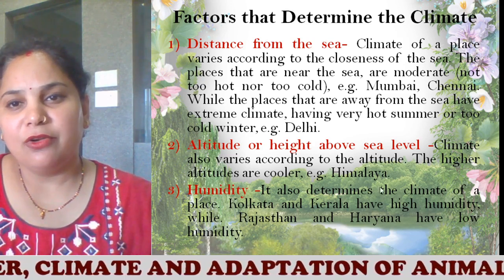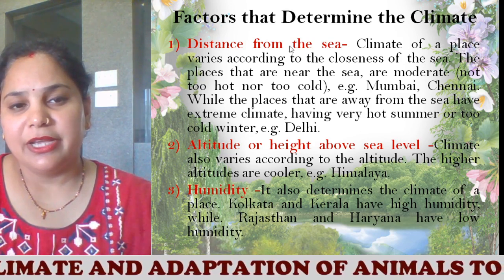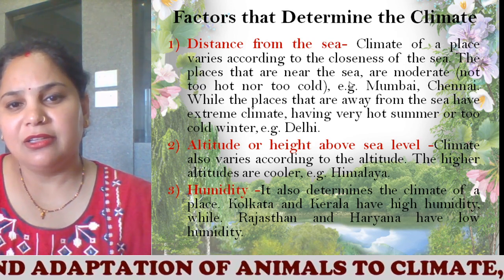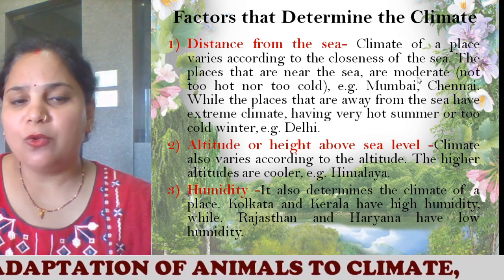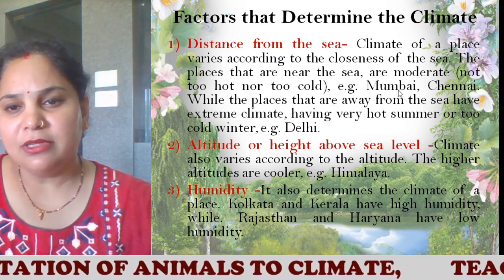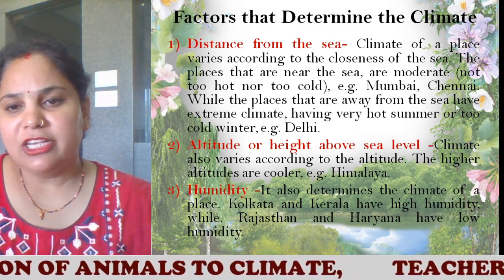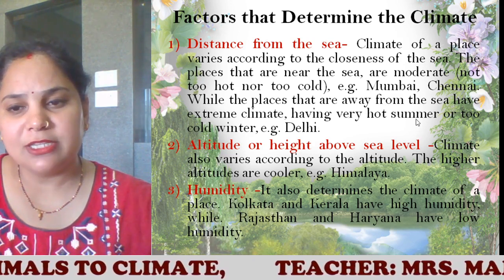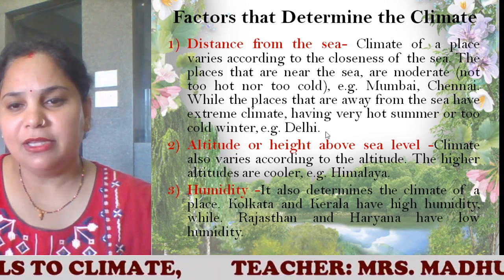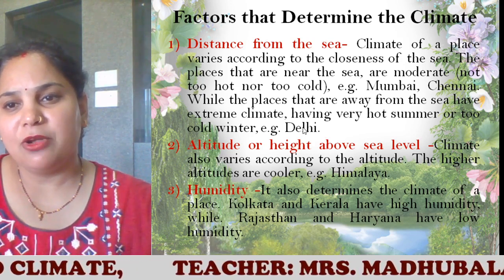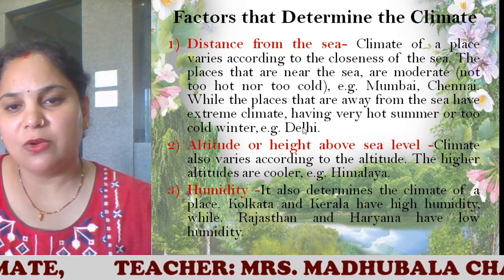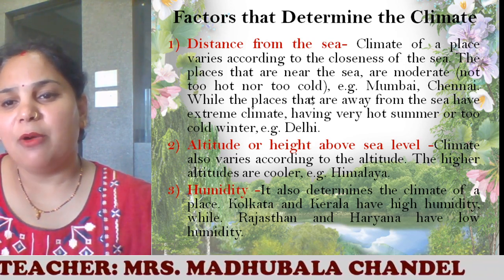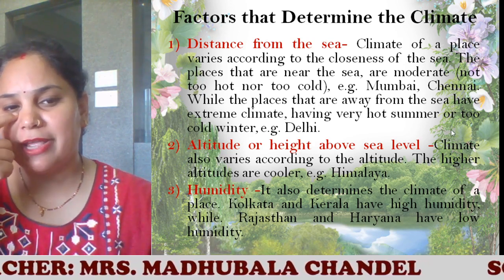The first factor that contributes to climate is distance from the sea. The climate of a place depends on its closeness to the sea. Places that are near the sea have a moderate climate — not too hot, not too cold. Examples include Mumbai and Chennai, which are coastal areas. Places that are away from the sea have an extreme climate, with very hot summers or very cold winters — for example, Delhi. So depending upon the distance from the sea, the climate of a place changes.